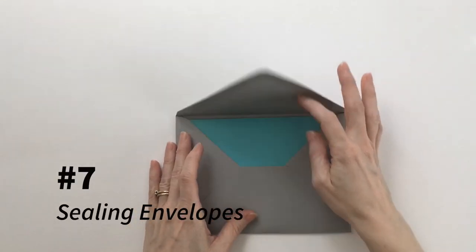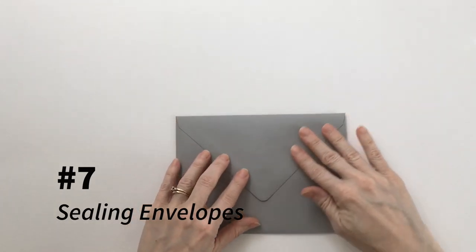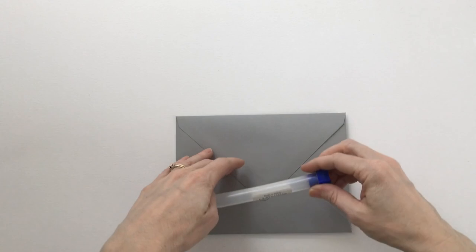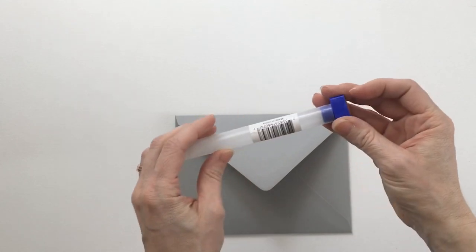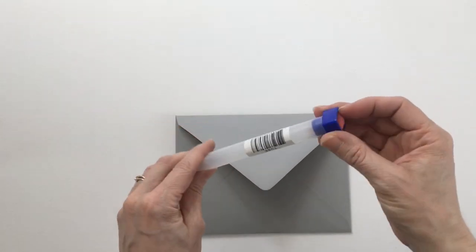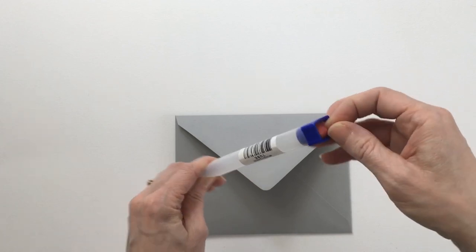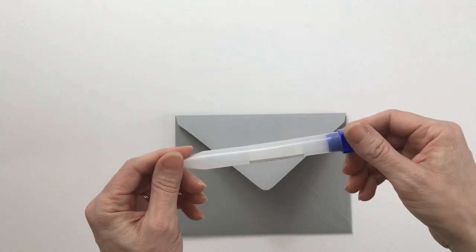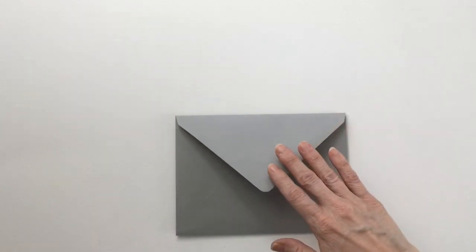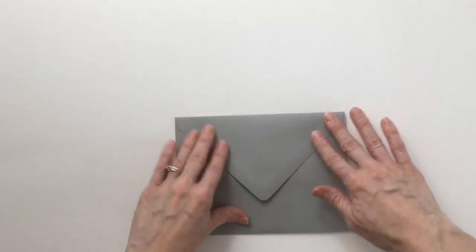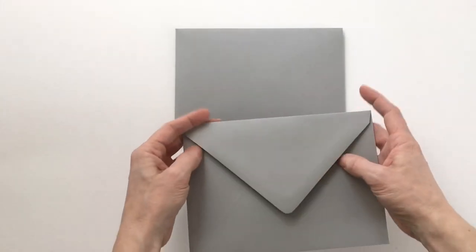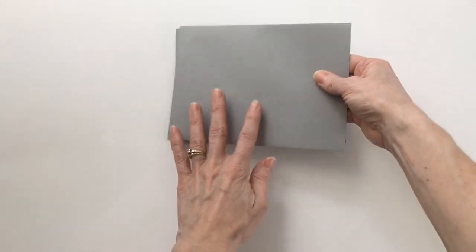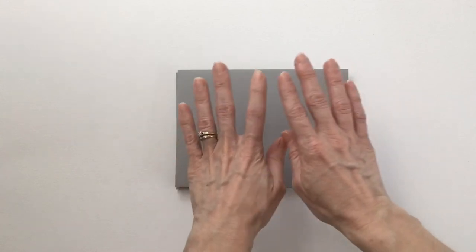When sealing envelopes, lick the gum line with your tongue and press firmly to seal. I would not recommend using these little sponge roller things because I've tried them several times before and they're always too wet. It always wrinkles the edge because it's too wet. So I don't recommend using these. Use your tongue, lick it and lay it flat. When you're done pressing it, flip it over like this, stick it in a pile to dry. And then when you get through with your next one, lick it, press it, and then flip it and lay it on top of the one that you just did. And the weight of the stack will help them stay flat as the rest of the stack dries.